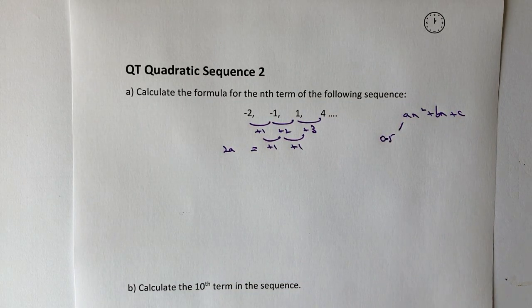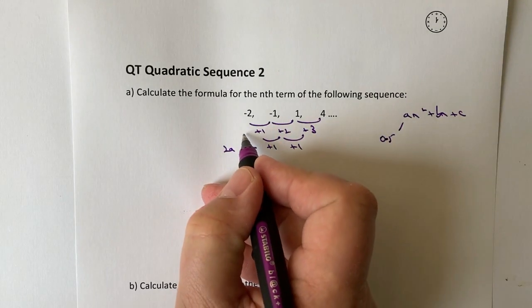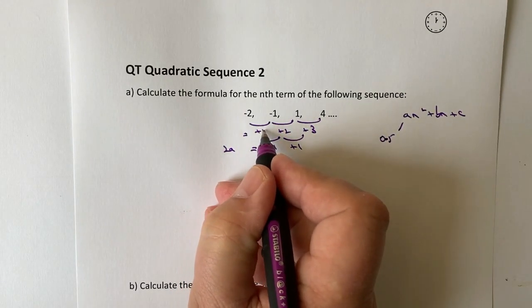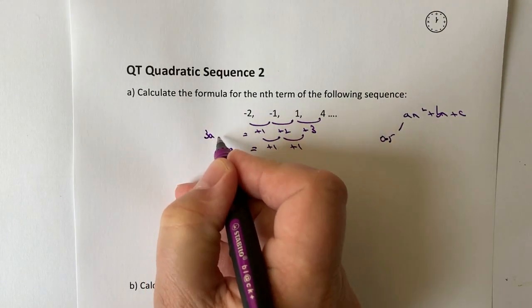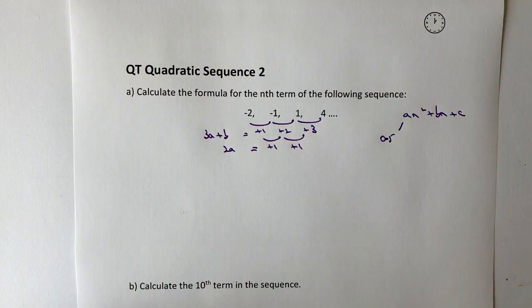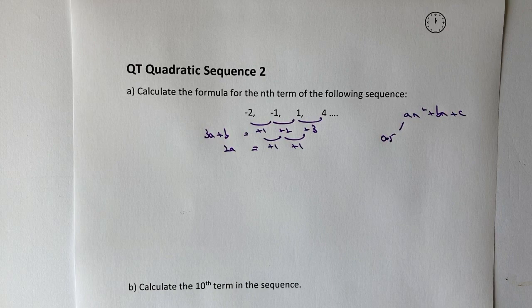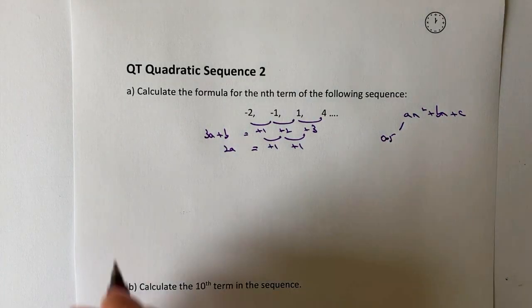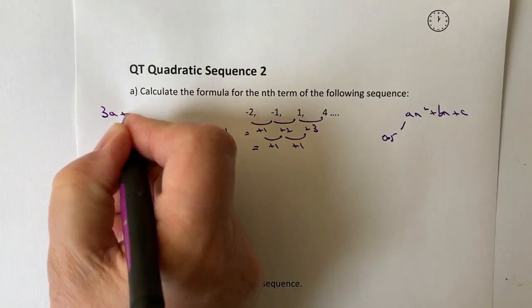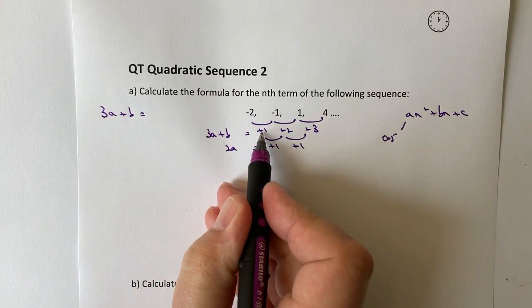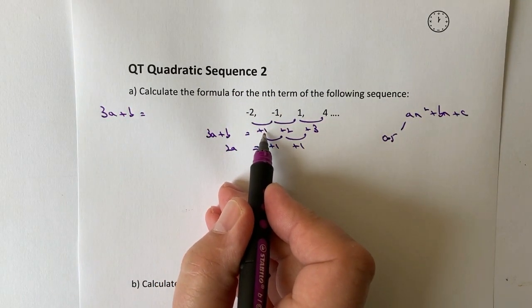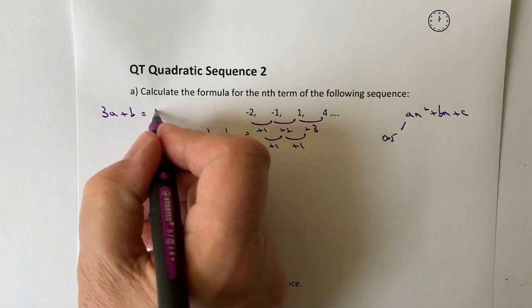The next little bit of it is this first number here, which is +1, is equal to 3a + b. And I'm going to use that formula now because I know my value of a. So if I write 3a + b equals +1, just be very careful with all of these positive and negative numbers. So this is going to be just 1.